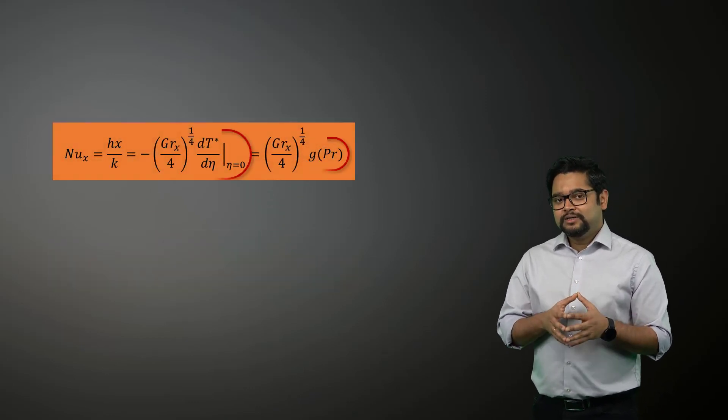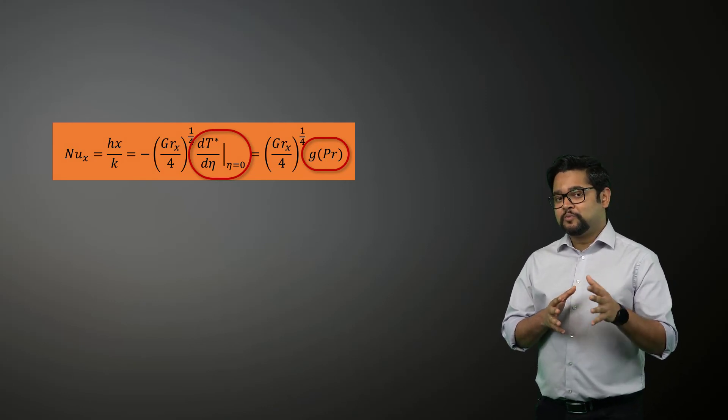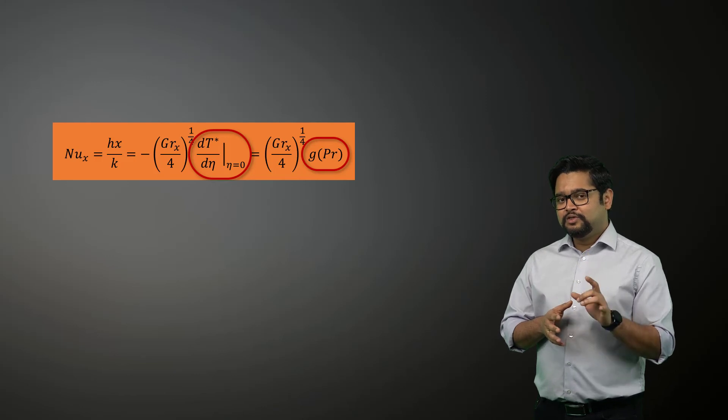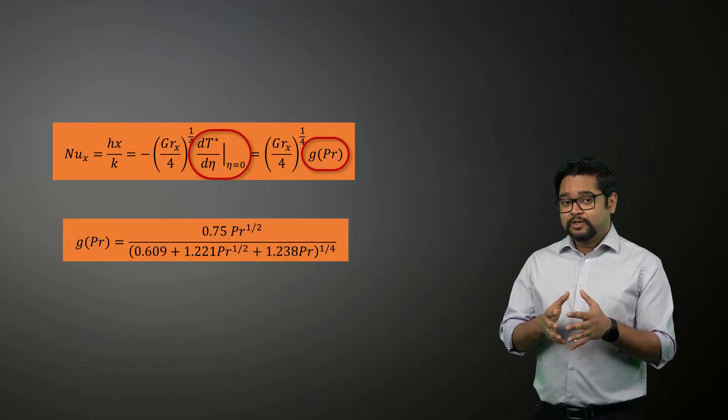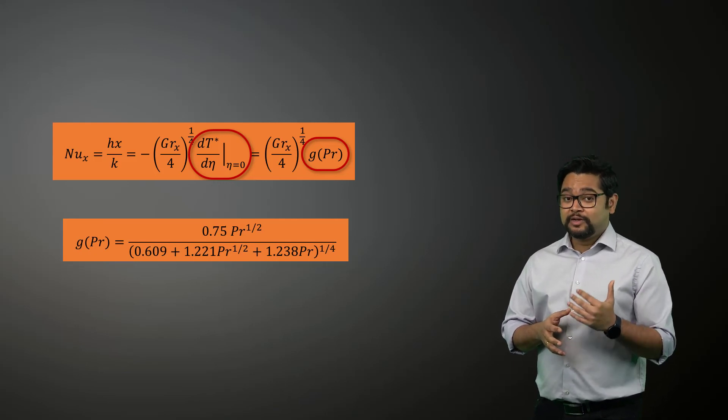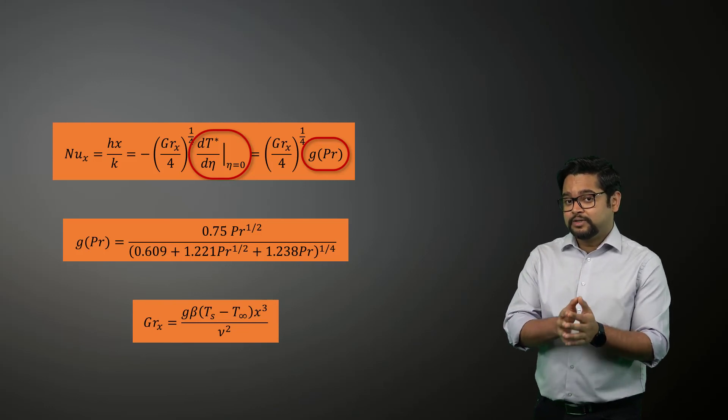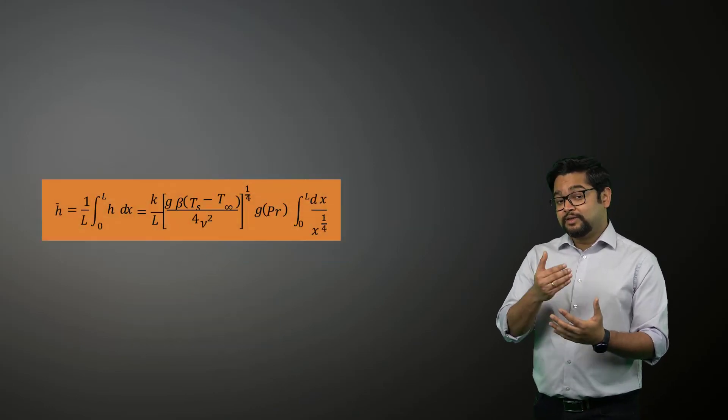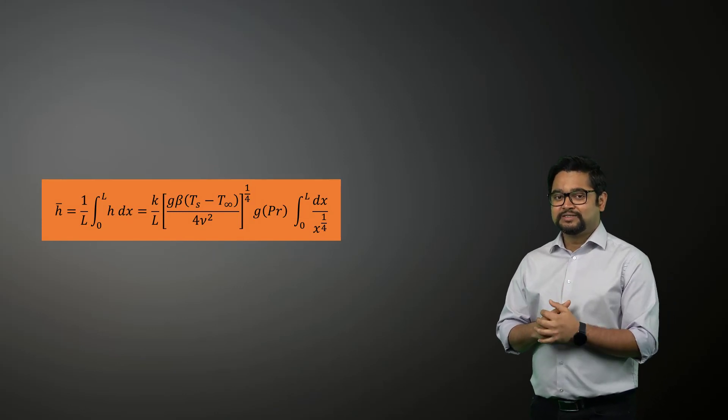We can see that the dimensionless temperature gradient at the surface is a function of the Prandtl number. This Prandtl number function can be expressed in this form using interpolation. Since we already know the local Grashof number can be expressed using the following expression, we can express the average convection coefficient for this surface of length L as this.